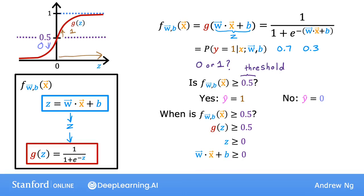To recap, the model predicts 1 whenever w dot x plus b is greater than or equal to 0. And conversely, when w dot x plus b is less than 0, the algorithm predicts y is 0.